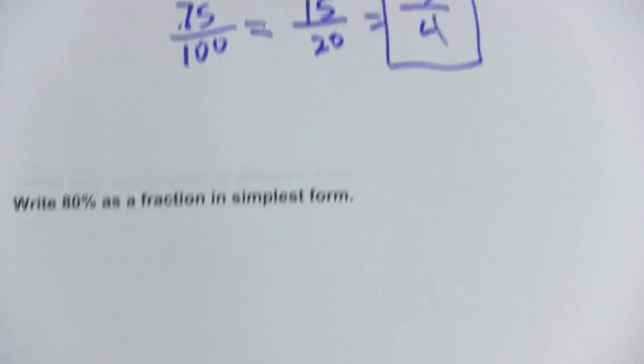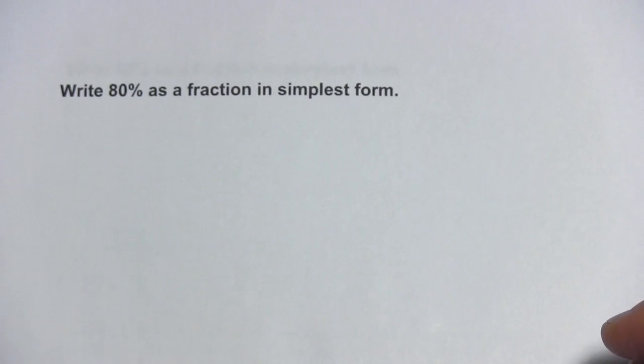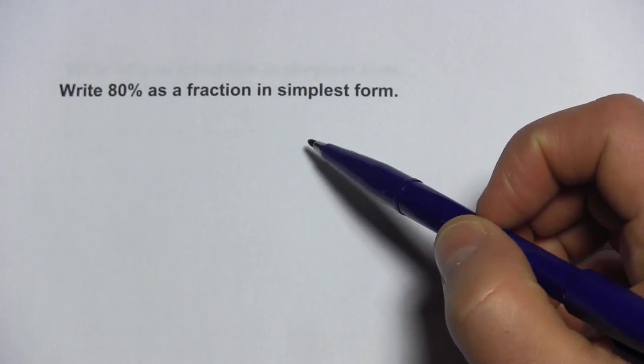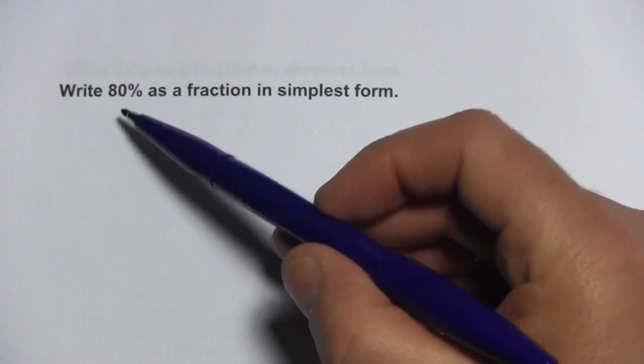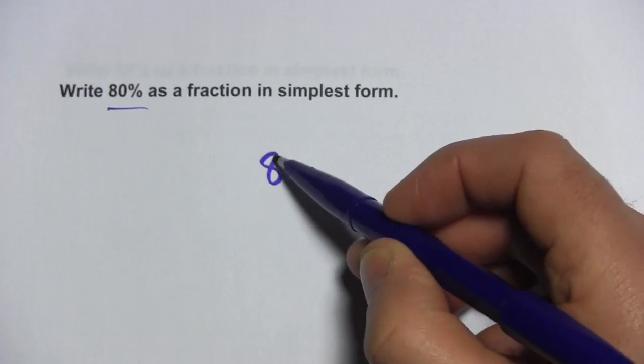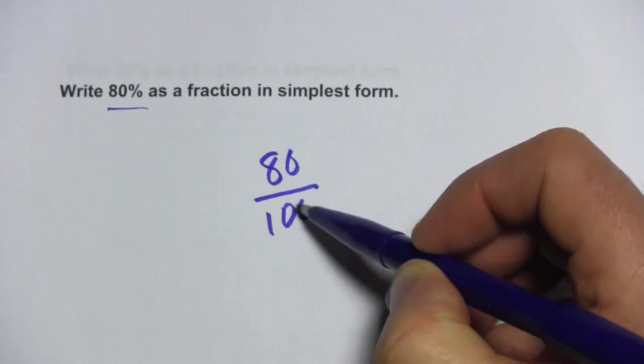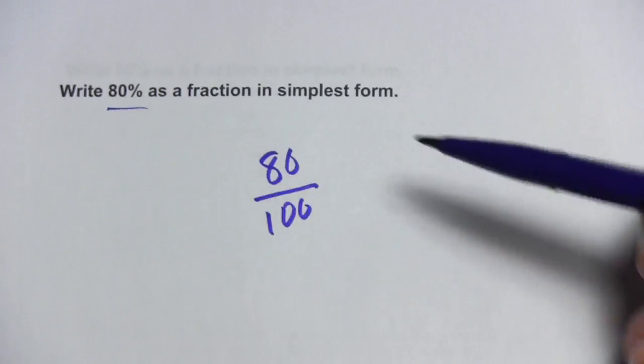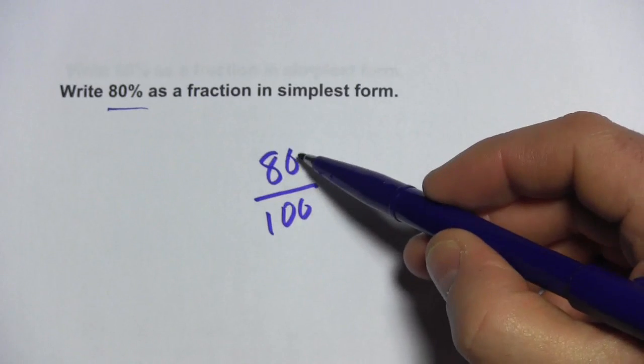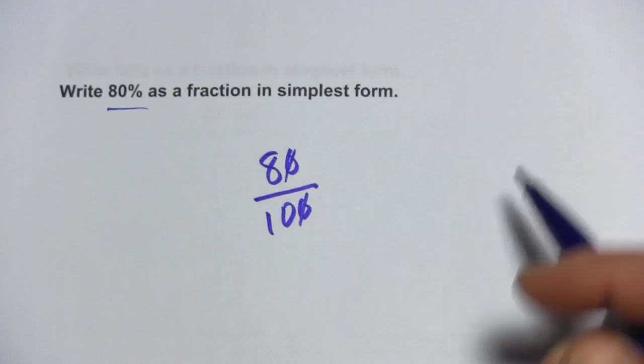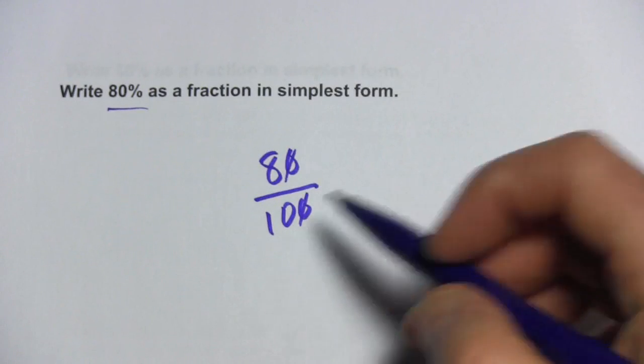Alright, let's try one more. So we've got 80%. We want to write this as a fraction in simplest form. Any percent can be written as that number over 100. So this is 80%, 80 over 100. I can definitely divide both by 10 to start with and I get 8 over 10.